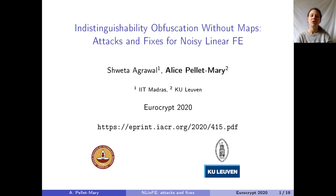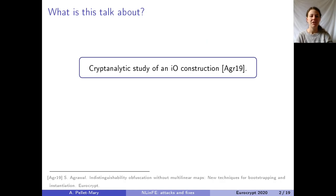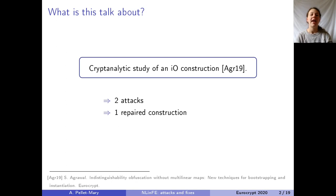Hello everyone. I'm going to present a joint work with Shveta Agrawal called 'Indistinguishability Obfuscation Without Maps: Attacks and Fixes for Noisy Linear FE.' We studied an IO construction — an Indistinguishability Obfuscation construction — proposed by Shveta Agrawal at Eurocrypt last year. We found two attacks on the construction and proposed a fix that prevents both attacks.